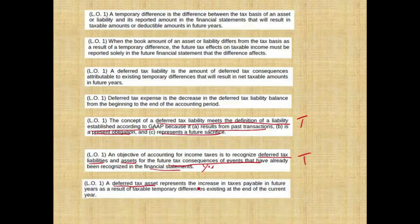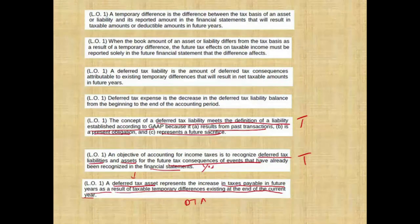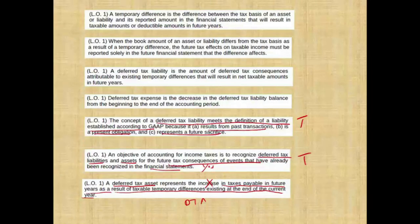A deferred tax asset represents the increase in taxes payable in future years as a result of a taxable temporary difference existing at the end of the current year. Does a deferred tax asset represent an increase in taxes payable? No. A deferred tax asset represents a future savings or an increase in refund. A deferred tax liability would represent an increase in taxes payable — not a deferred tax asset.